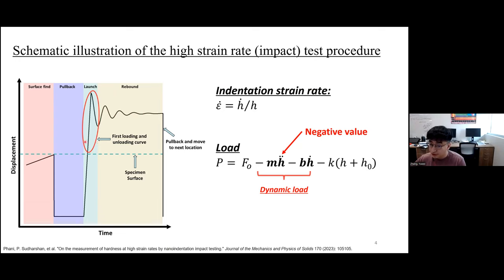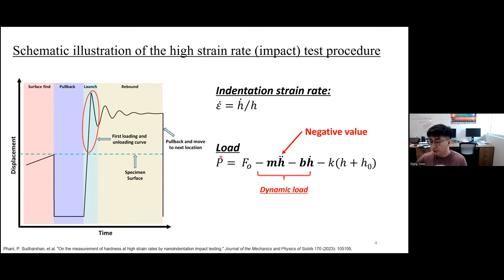The indentation strain rate during this procedure is defined as Ḣ divided by H, where Ḣ is the derivative of H with respect to time. The load on the sample equals the load on the magnetic coil plus the dynamic load, and the dynamic load is almost 10 times larger than the load on the magnetic coil. I won't spend too much time on the calculation details here — if you are interested, feel free to check the paper our group published recently.